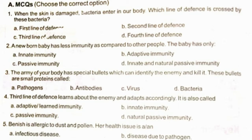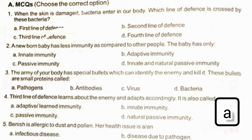Option B: The third line of defense learns about the enemy and adapts accordingly. It is also called Option A: adaptive or learned immunity.